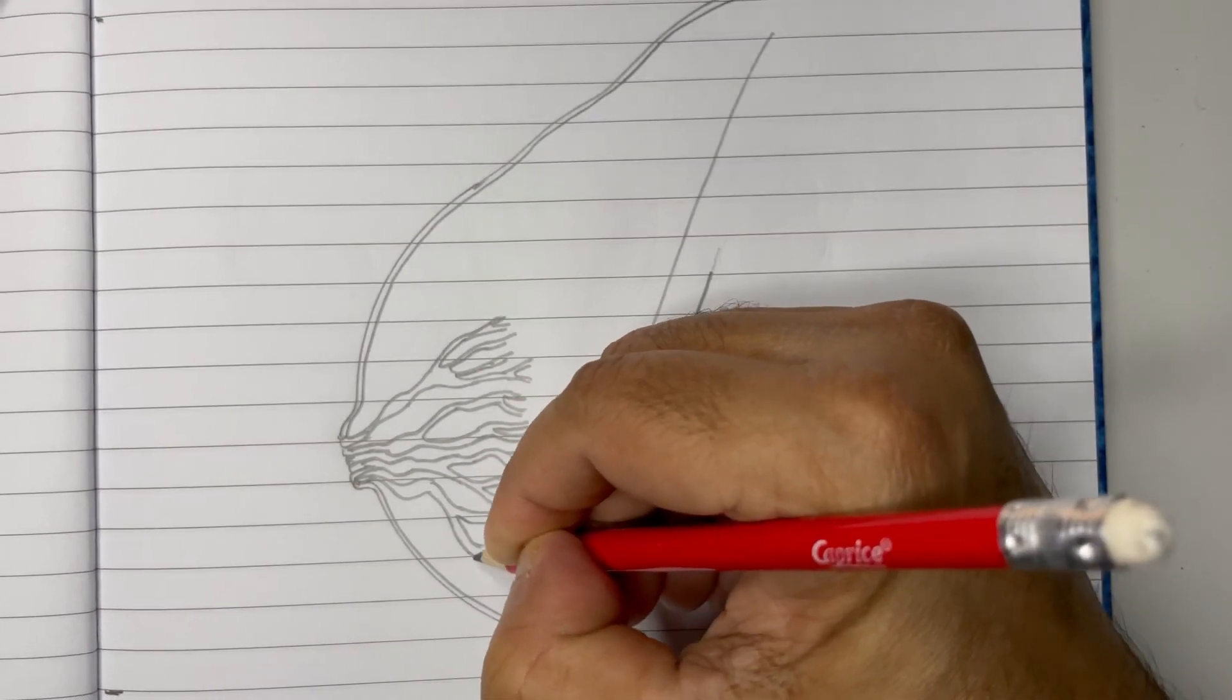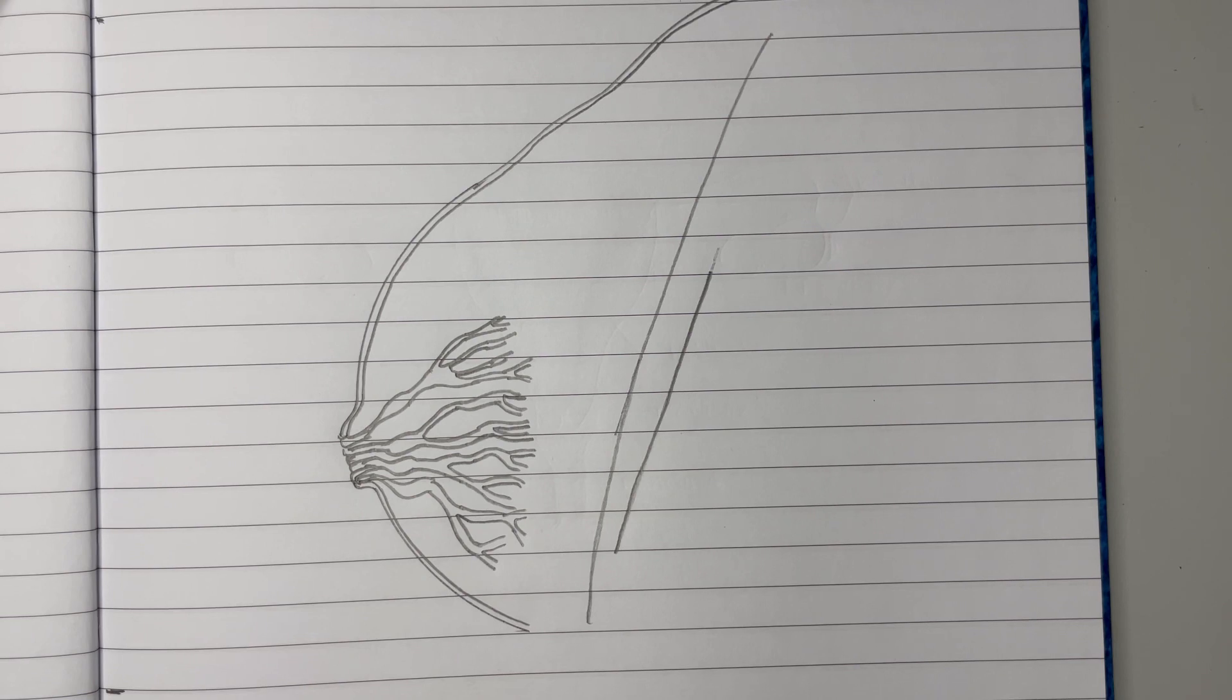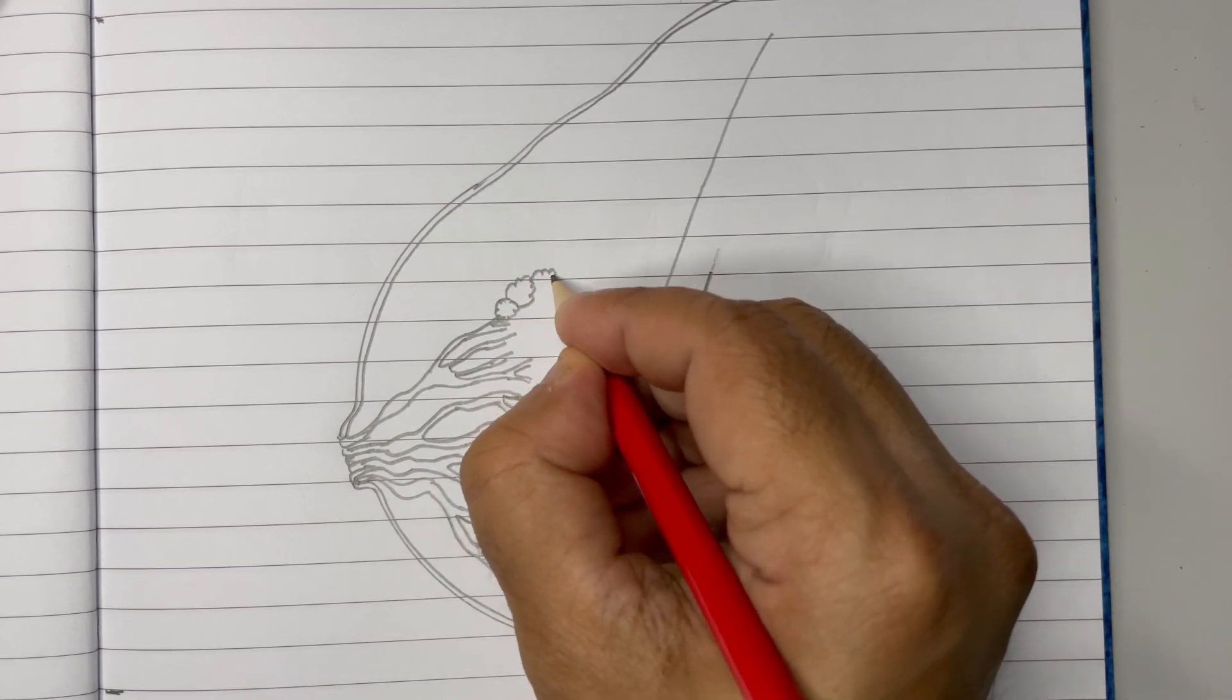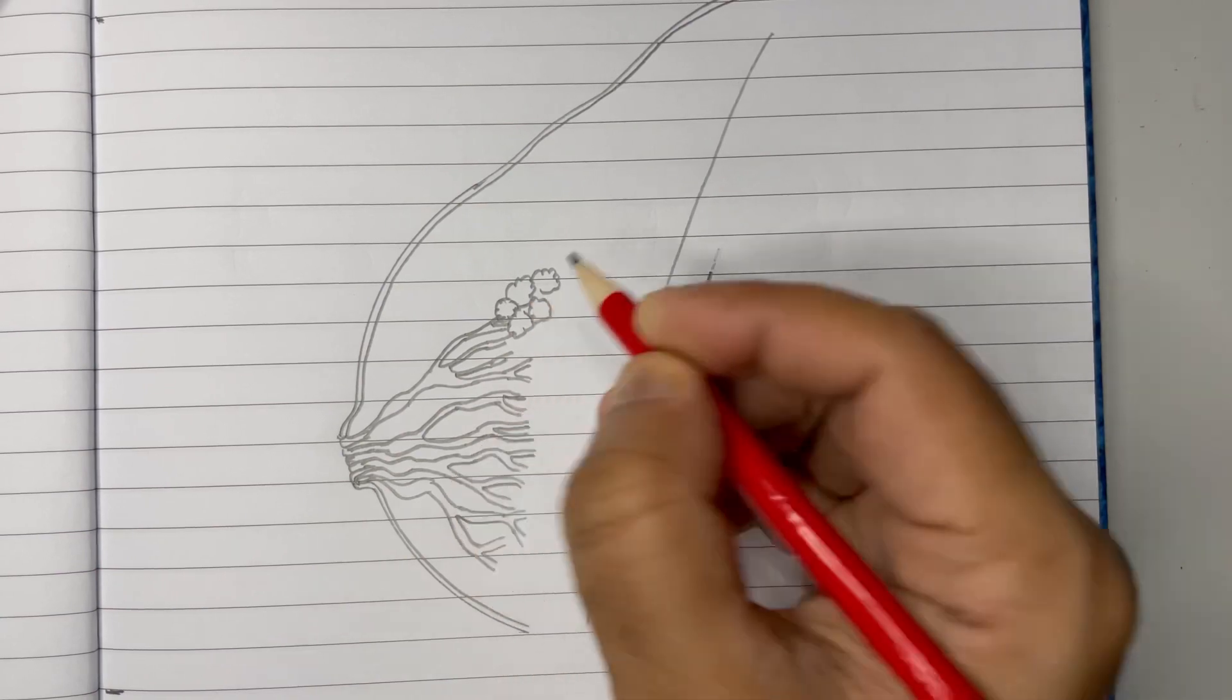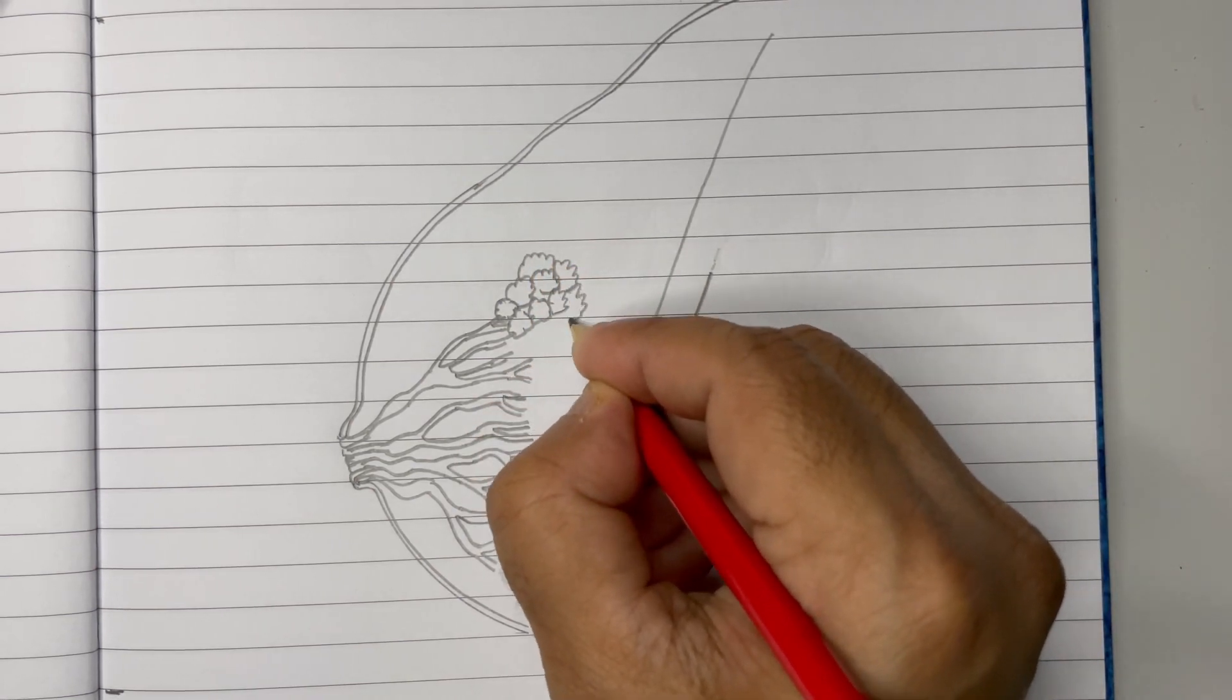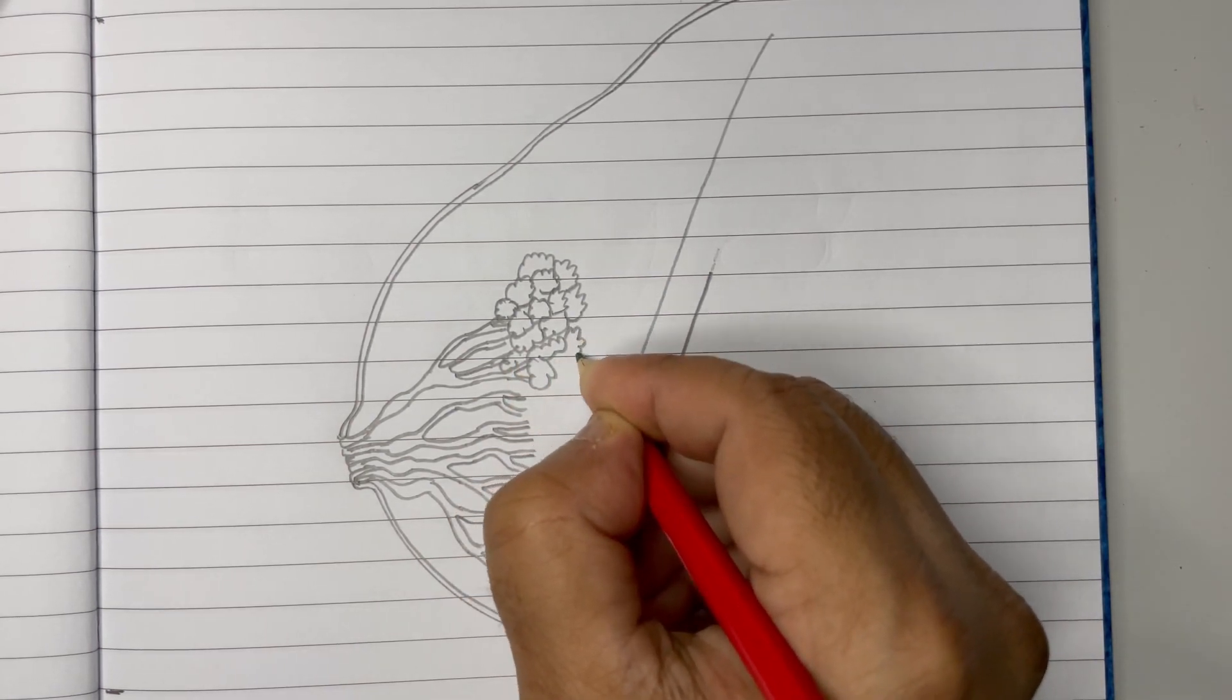At the end here, we can draw another one the same way, again branching and re-branching. When this much is done, now it's time to draw the mammary alveoli. It is very simple. Simply draw like a bunch of grape-like structures. You can draw any number.